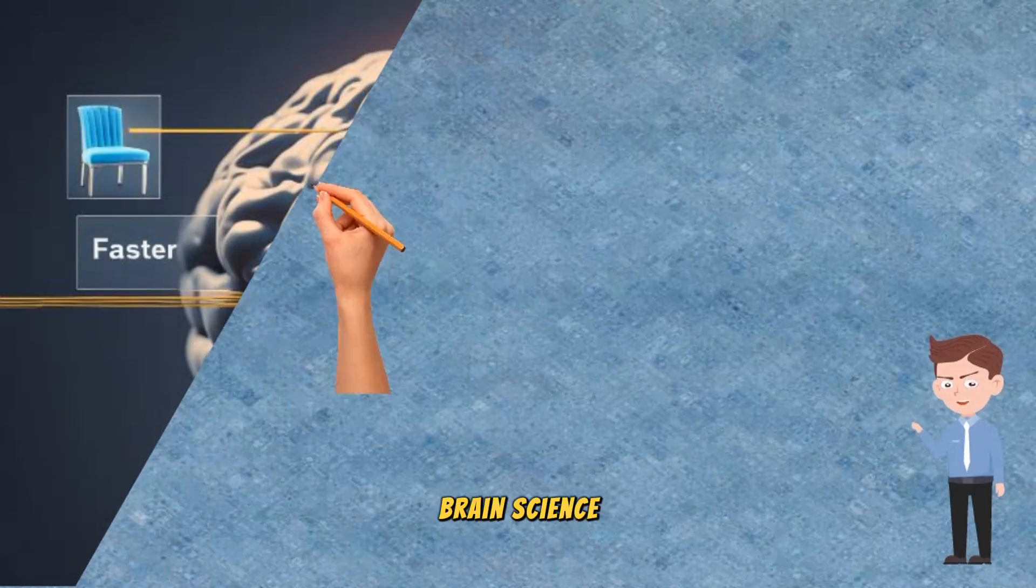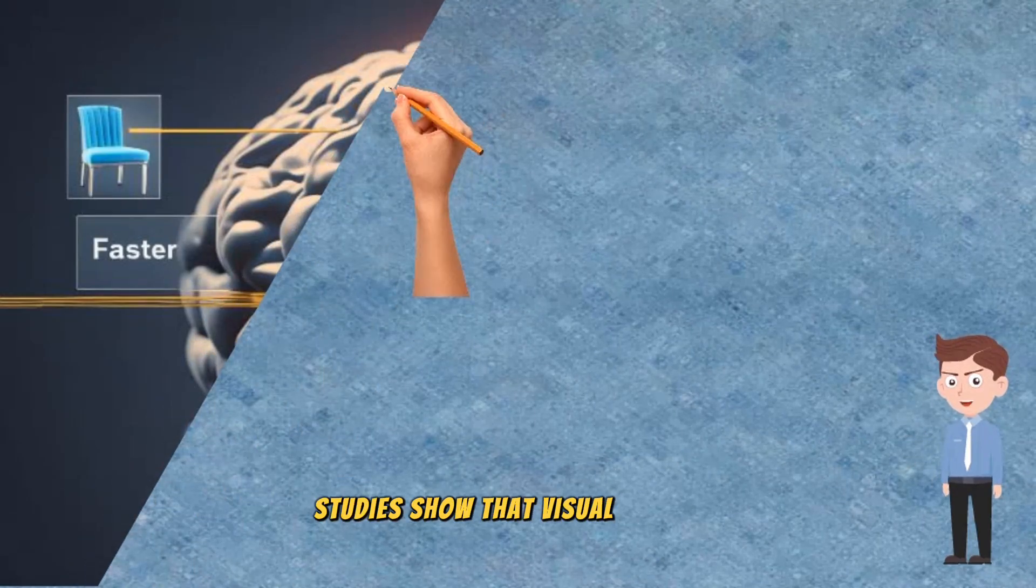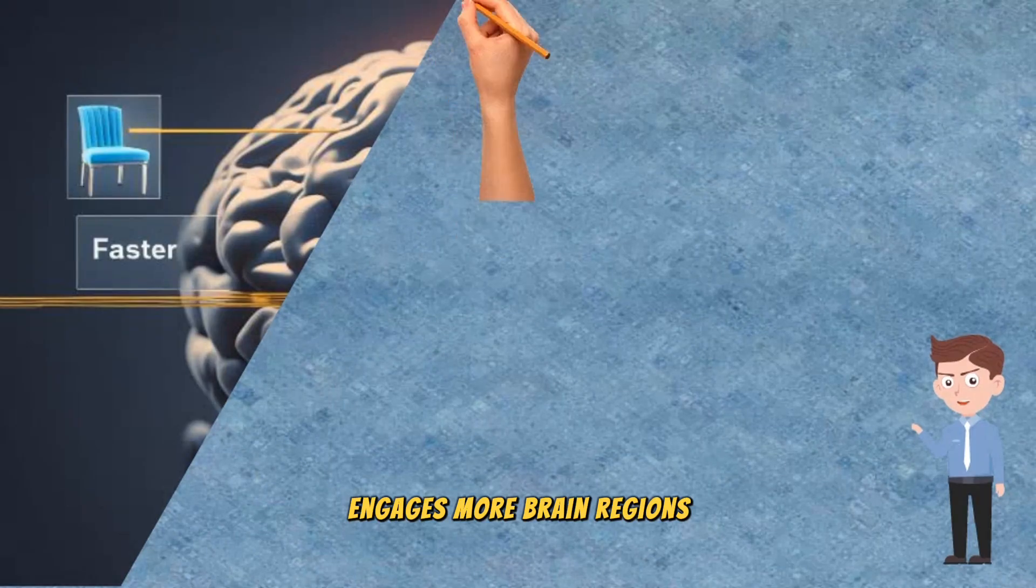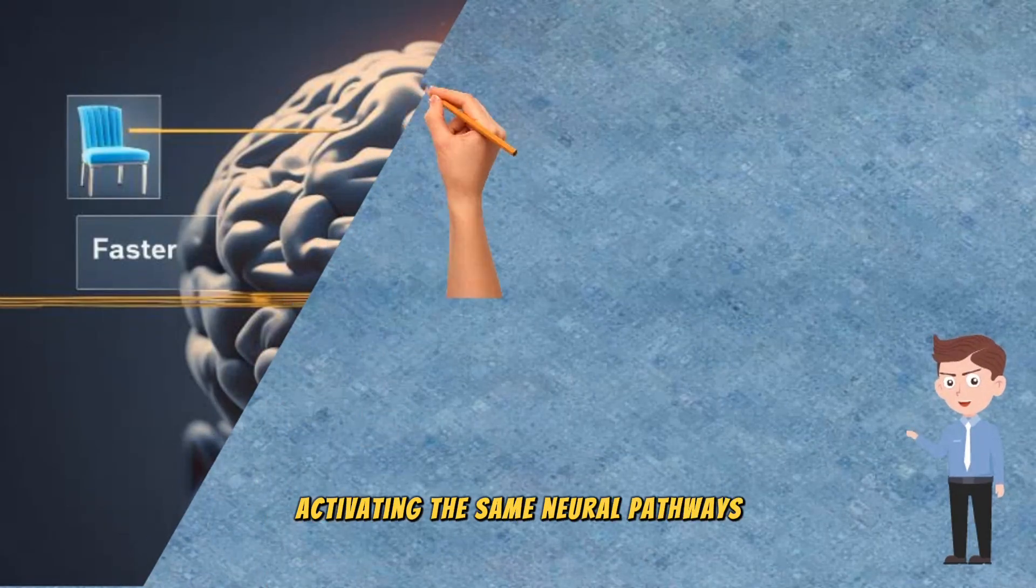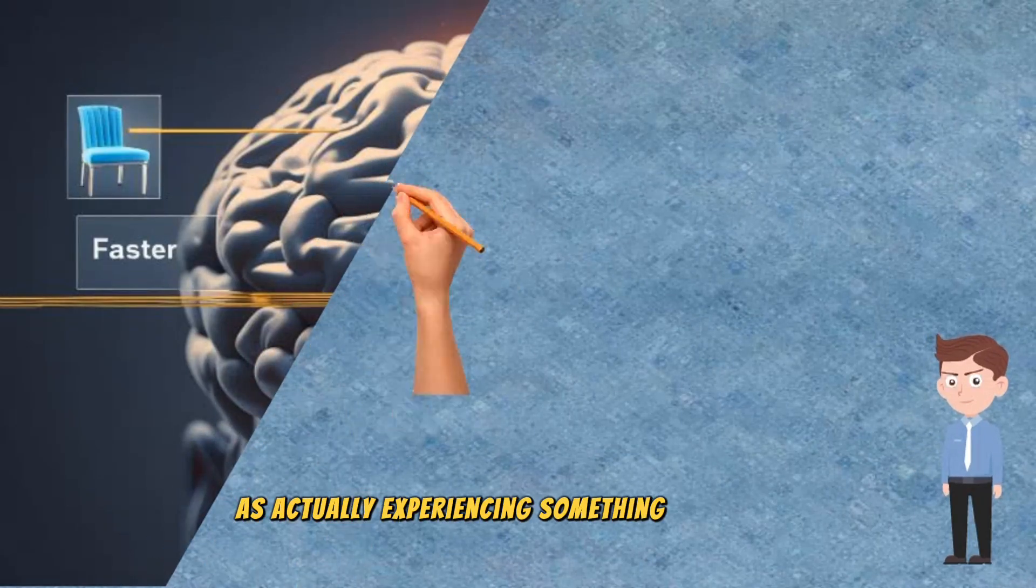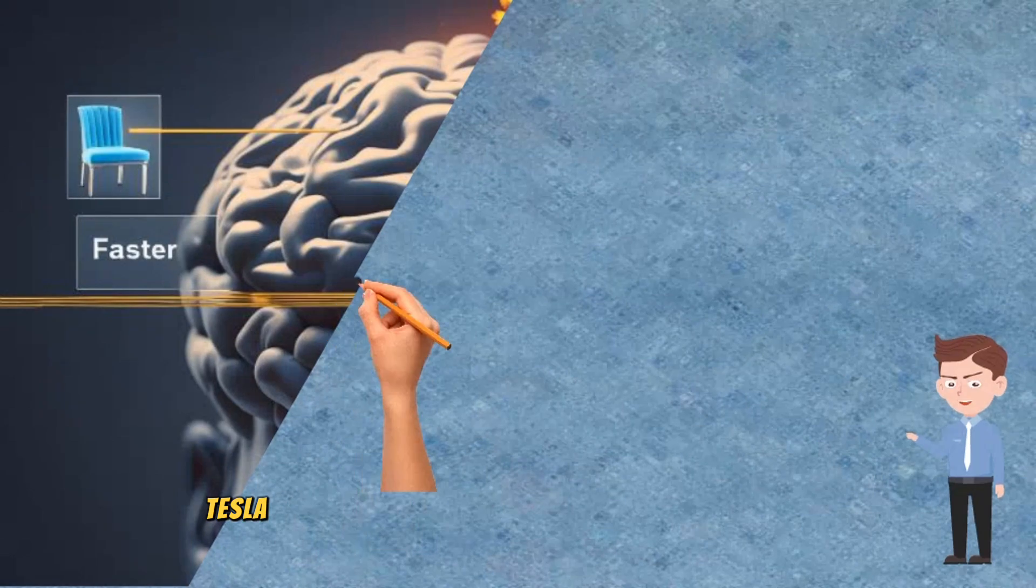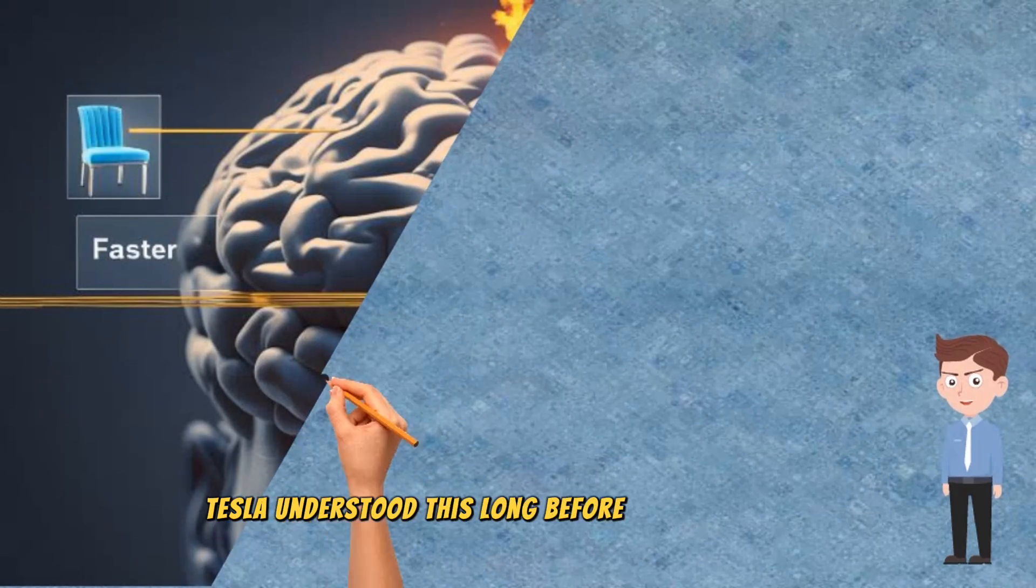Brain science. Studies show that visual thinking engages more brain regions, activating the same neural pathways as actually experiencing something in real life. Tesla understood this long before neuroscience did.